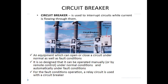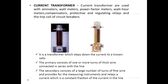We will learn about the circuit breaker. It is mainly used to interrupt a circuit while current is flowing through it. We have a requirement to open or close a circuit under normal or fault conditions. We can operate manually, by remote control, or automatically under fault conditions. For a fault condition operation, the relay circuit is used with a circuit breaker. The current transformer is used with a meter — watt meter, power factor meter, compensator, and protective and regulating relay.